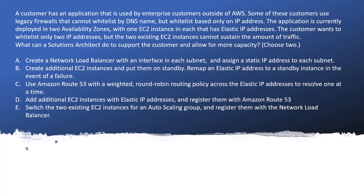The question says the customer has an application that is used by enterprise customers outside of AWS. Some of these customers use legacy firewalls that cannot whitelist by the DNS name but whitelist based only on the IP address. The application is currently deployed into two availability zones with one EC2 instance each that has an elastic IP address. The customer wants to whitelist only the two IP addresses, but the two existing EC2 instances cannot sustain the amount of traffic.